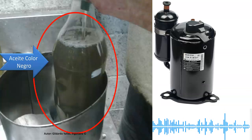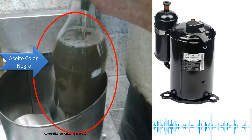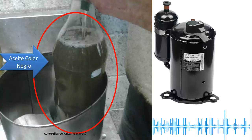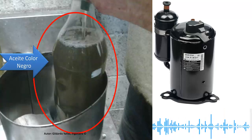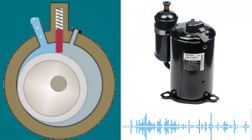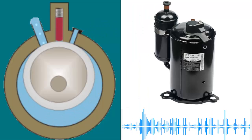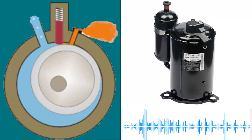When the compressor oil of the air conditioner comes out black or dark, it is a sign that something is not functioning correctly in the system. This condition may be due to several reasons, and it is important to address it properly to ensure the performance and the lifespan of the equipment.